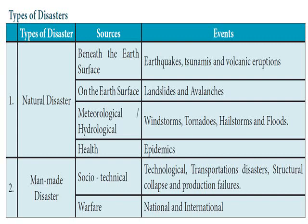If a natural disaster is occurring on the surface of the earth, you can find landslides and avalanches. Avalanches are the fall of snow from mountains, similar to how a piece of land falling down is called a landslide. When ice falls from ice-cap mountains, we call it an avalanche. It could also be due to meteorological or hydrological reasons like windstorms, tornadoes, hailstorms, and floods, or health reasons like epidemics. An epidemic spreading throughout the world is called a pandemic.